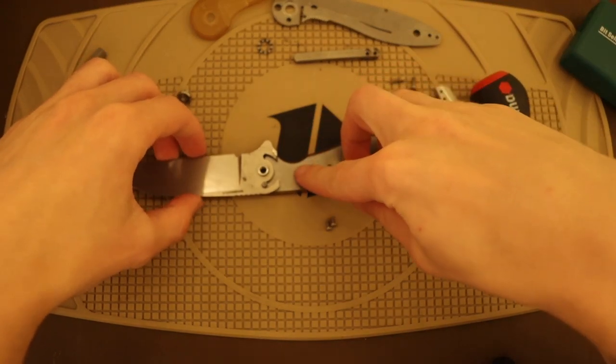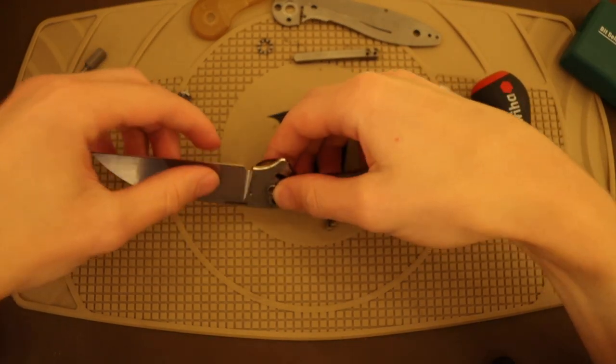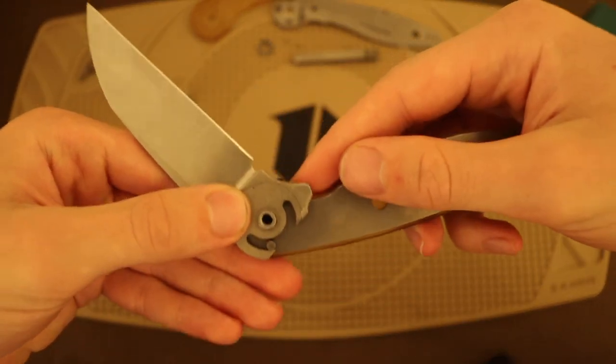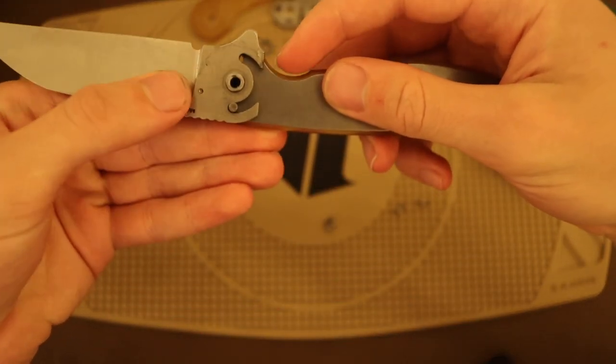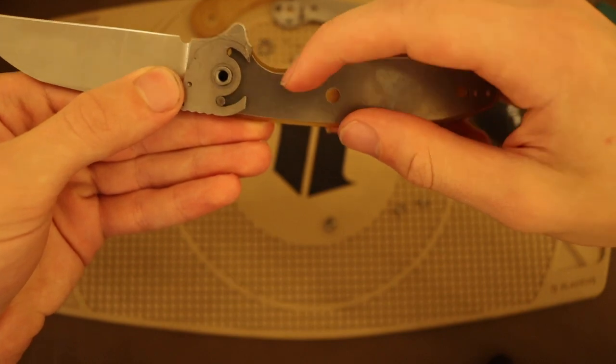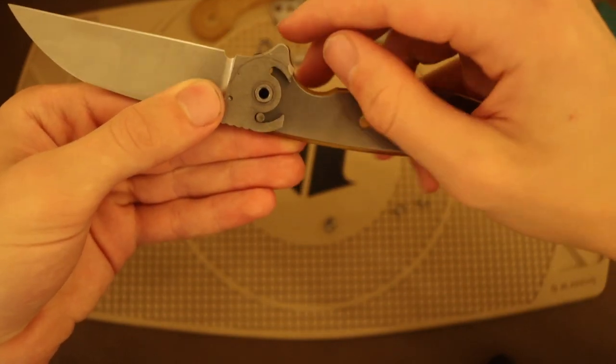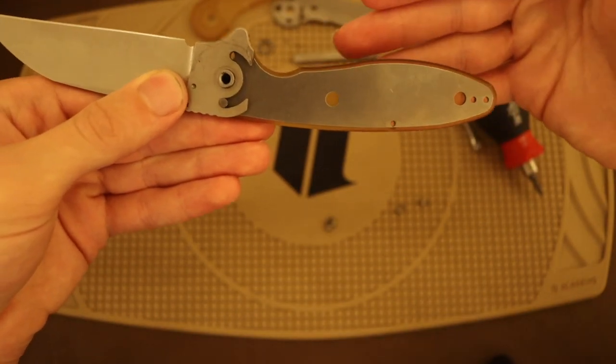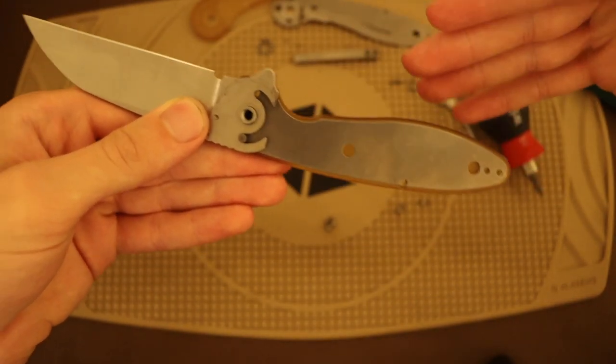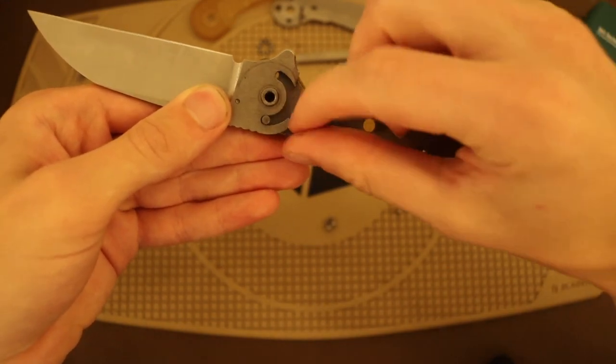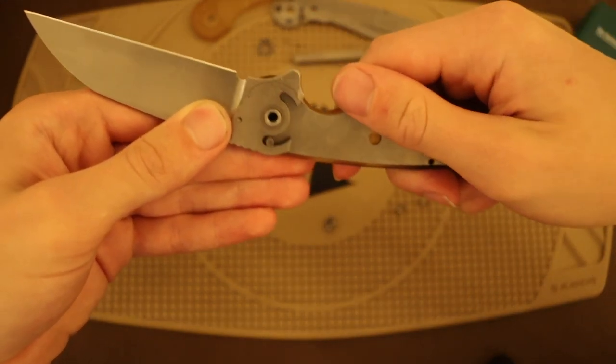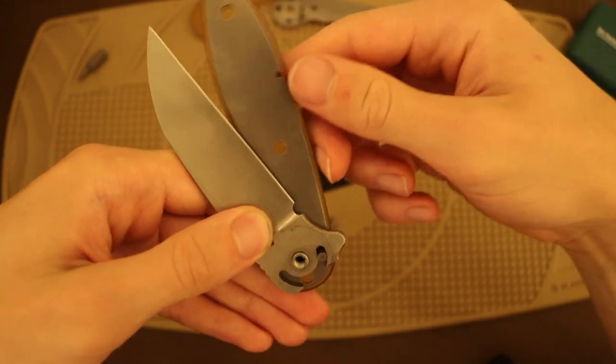But I do think now that we are at this point, we can take a look at how this blade works. So like I was saying earlier, I'm gonna try to lift this up for you guys. Like I said, with this system, this does have a stop pin, but that stop pin is actually inset into the tang of the blade.